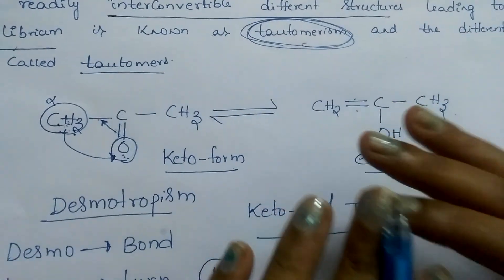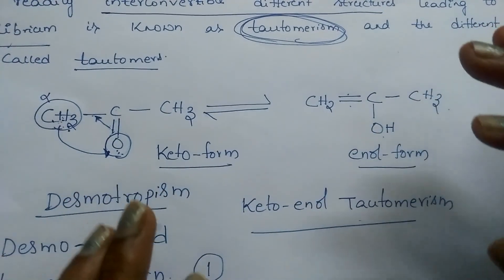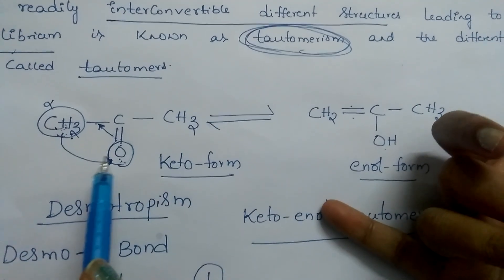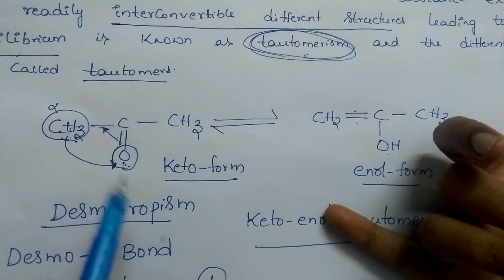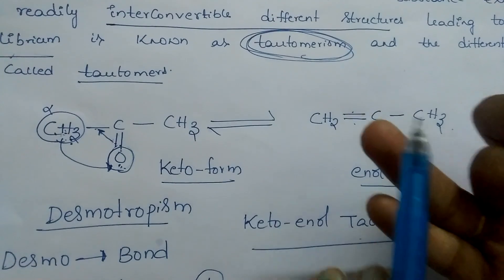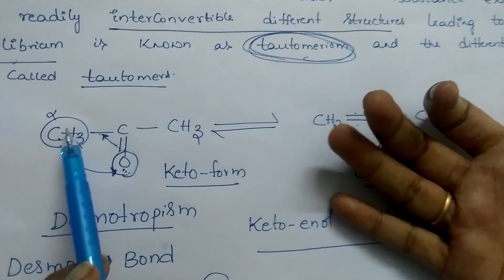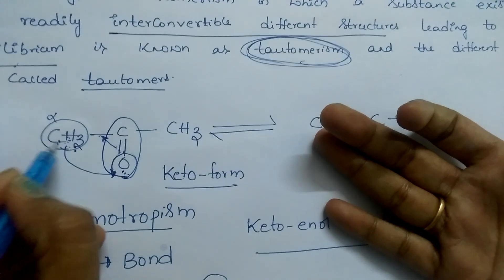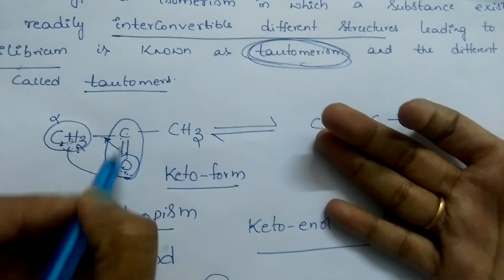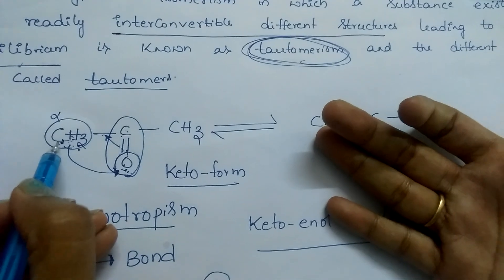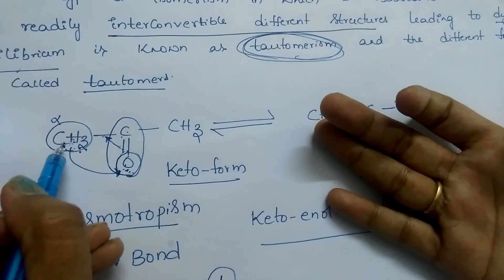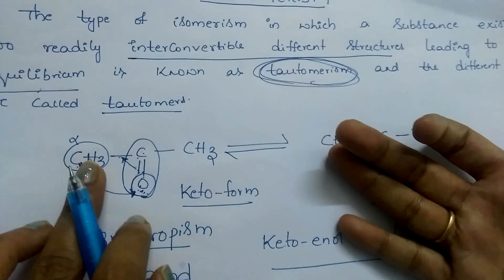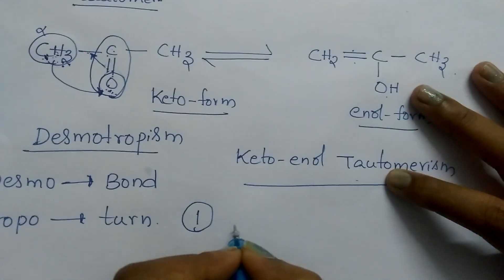Whenever you are solving any illustration for tautomerism, two things you should check: first, it should have an electronegative atom bonded through a multiple bond; second, it should have alpha hydrogen — meaning the carbon next to the carbonyl group is called alpha carbon, and the hydrogen attached to it is alpha hydrogen. The compound must have alpha hydrogen.